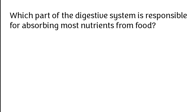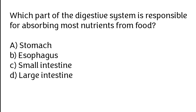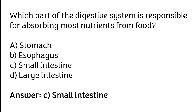Which part of the digestive system is responsible for absorbing most nutrients from food? Stomach, esophagus, small intestine, or large intestine. The correct answer is option C. The small intestine is responsible for absorbing most nutrients from food.